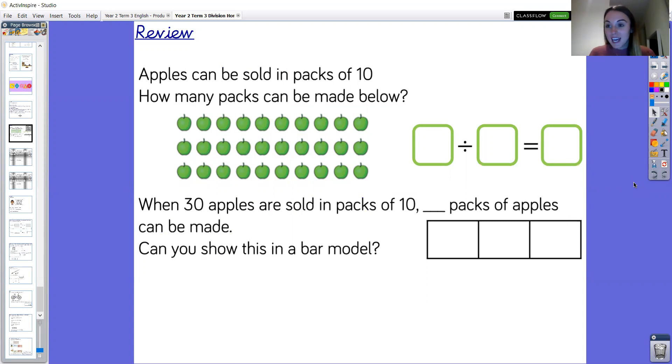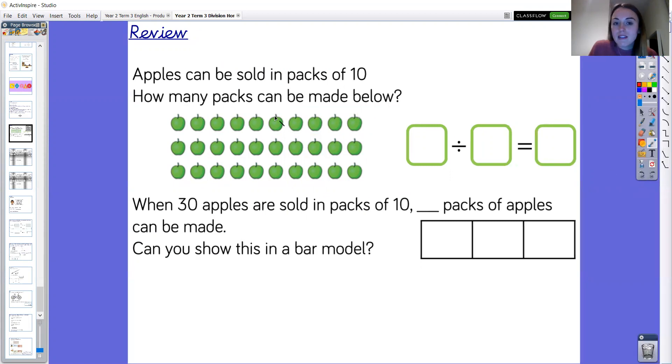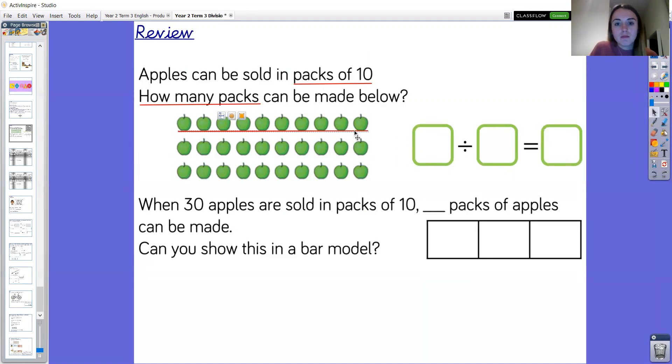Well done year two, great thinking. Okay let's explore this together. So apples can be sold in packs of 10. So packs of 10 is some key information that I'm going to underline. And as you can see here if we have a look at the array we can see that in each row there are 10 apples. So we are looking at our packs of 10 in each row. The question then says how many packs can be made below. So the key information is how many packs.